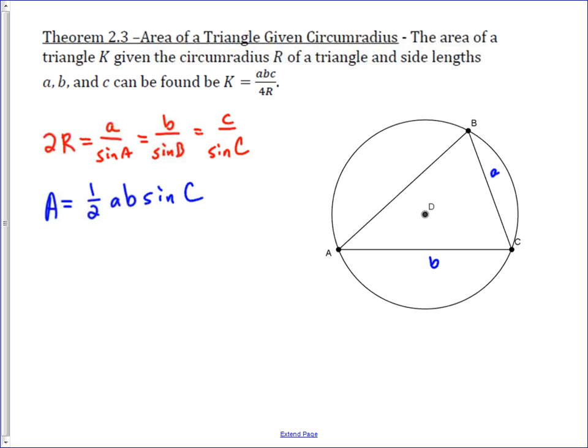It's a pretty nice result from here. Since I chose a b sine C, it could have been a c sine B, or b c sine A, or whatever, but I chose a b sine C. We're going to use this part of the extended law of sines, and that is 2R equals c over sine C.